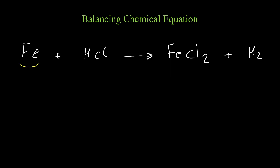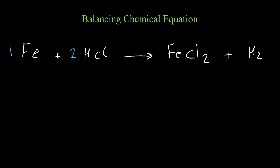Let's start with iron. On the left side we have one iron and on the right side we have one iron, so iron is balanced. For chlorine, we have two chlorine on the right side but only one on the left, so we put two in front of HCl. Now we have two chlorine on both sides. We double-check hydrogen: two on the right and two on the left. So the balanced equation has one Fe, two HCl, one FeCl₂, and one H₂.